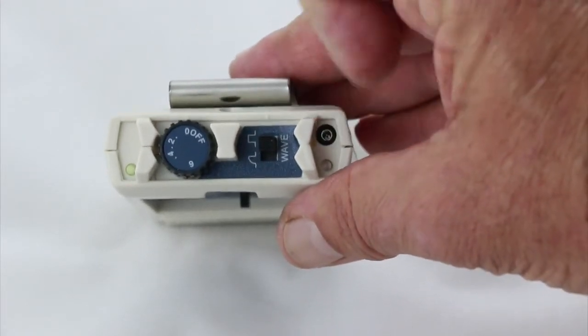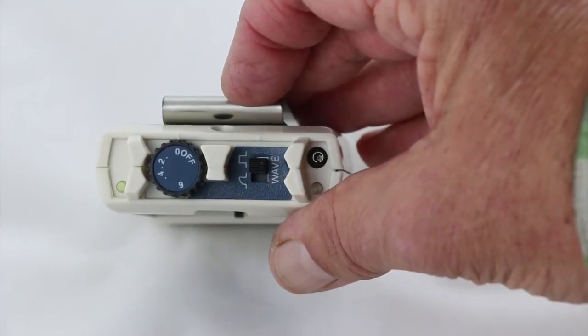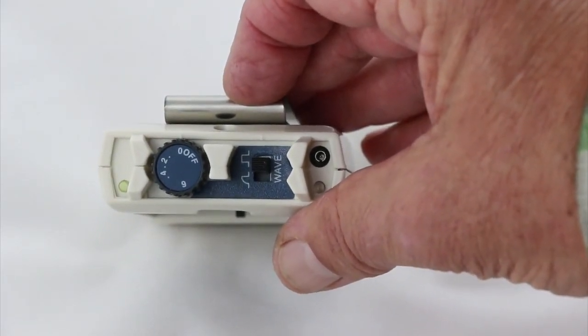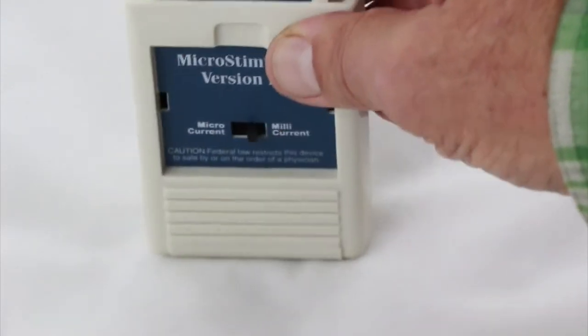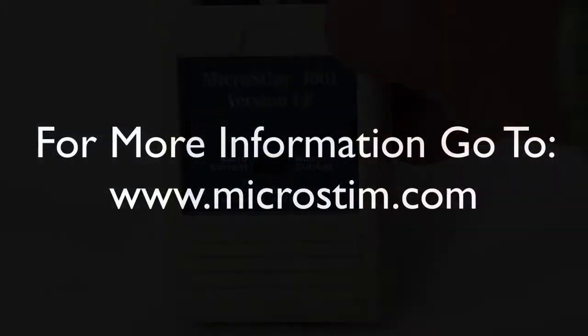Over here is the plug where we will plug the main wire in. There is a video on this, so please check that out. But these are the basic switches and settings for the MicroStim 100i LE.